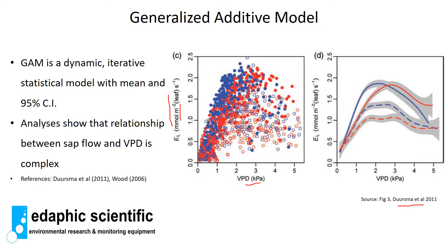Instead, we applied a Generalized Additive Model (GAM) — a dynamic iterative model that applies a dynamic mean and 95% confidence interval. The results show that when VPD increases, sap flow increases, but as VPD keeps increasing the relationship becomes complicated: it doesn't just taper off, it actually decreases and shows humps. By using a GAM model we can investigate this relationship in much more detail.